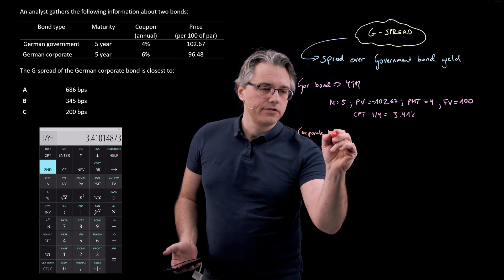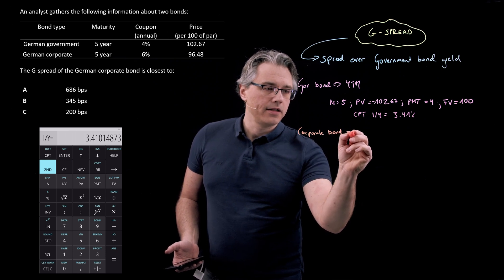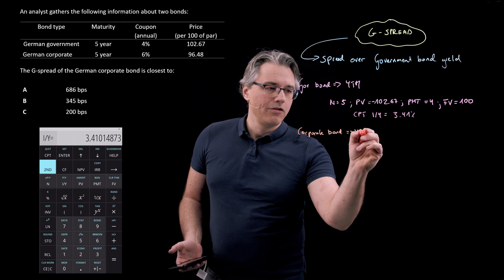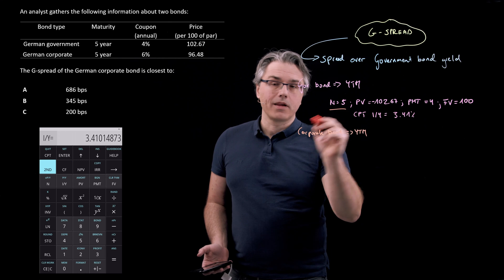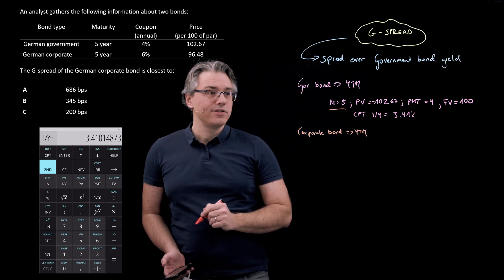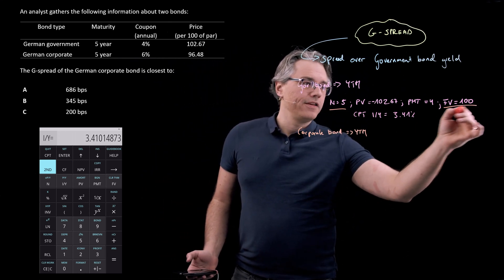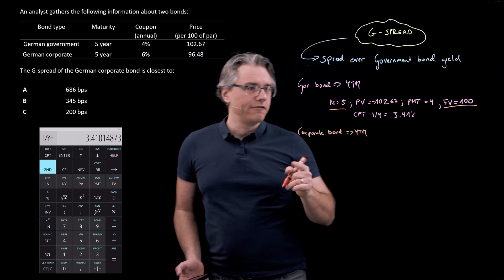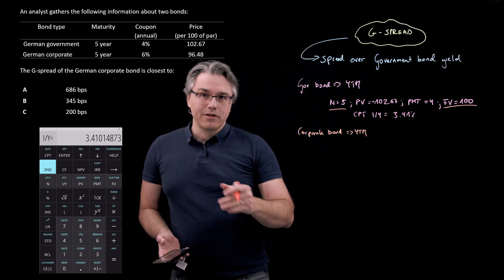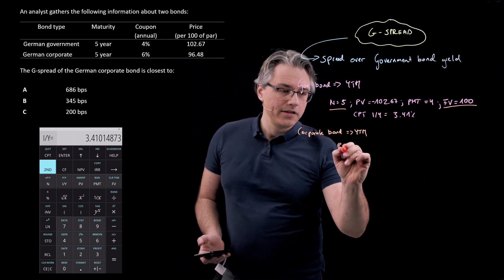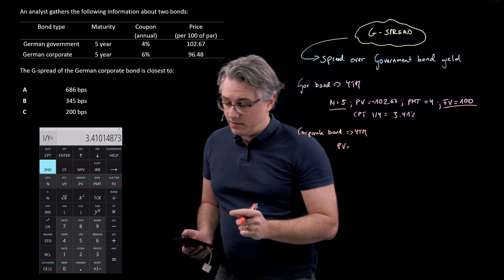And actually, I'm going to utilize the fact that my calculator already has many of the inputs in place. For example, the corporate bond also has a five-year maturity, and its FV is also going to be 100. The things that are going to be different are obviously the price. So I'm not going to change all the inputs. I'm just going to overwrite the inputs, which are indeed different.